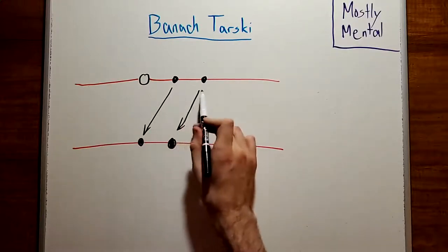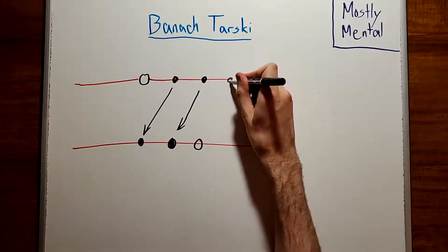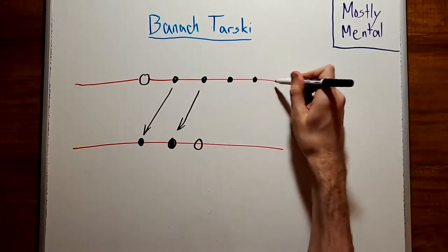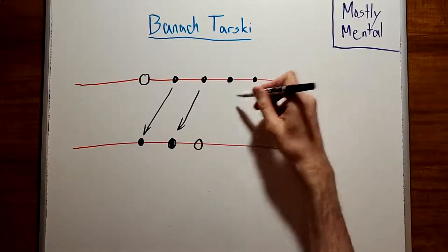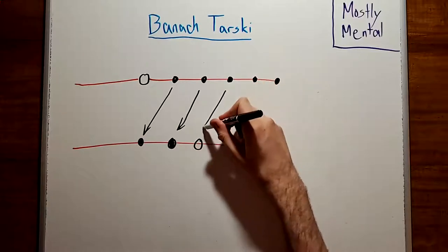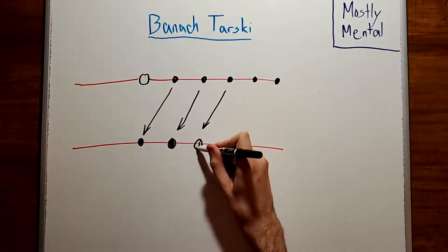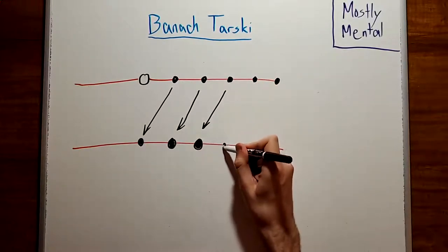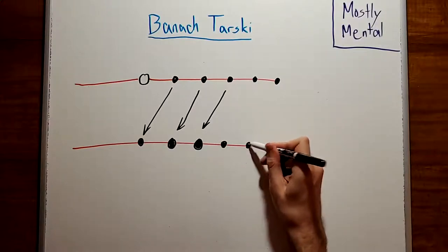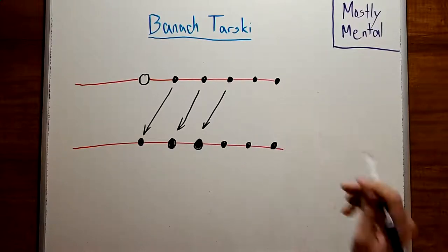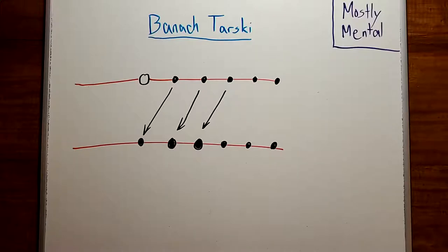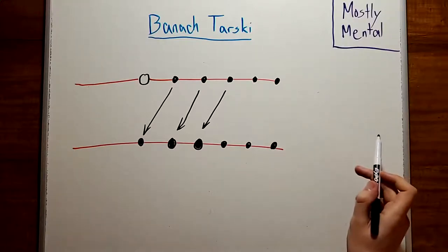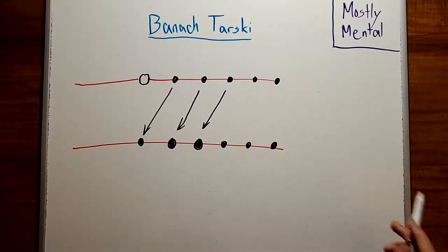We can take a set of points that are spaced one unit apart, up here, and shift each of them over to the left by one unit, to fill in the holes down here. Now, you may be wondering, what about the last point? Surely there's going to be a hole somewhere. And that's why it's so important that we go on forever.